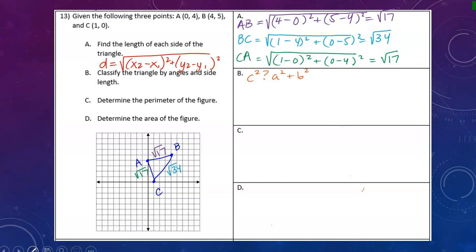First, I'll put a star next to BC because that's my biggest side. That means I'll plug in BC for the C value. So I have the square root of 34 squared. And A squared and B squared are the same number, so it doesn't matter which is which.